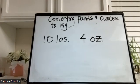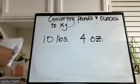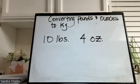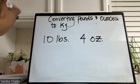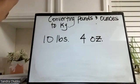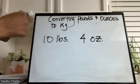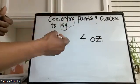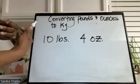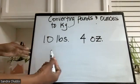Greetings. I just want to take this opportunity to discuss converting pounds and ounces to kilograms. We have one example here. Step one with converting pounds and ounces to kilograms: step one is to always start with the ounces, converting the ounces to pounds first. We know that 16 ounces equals one pound.